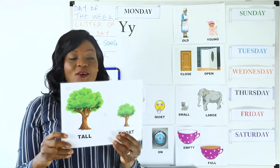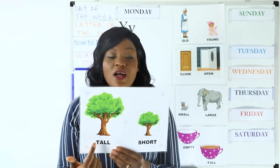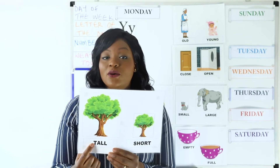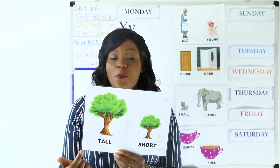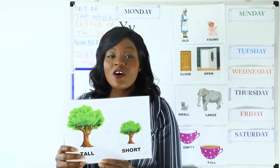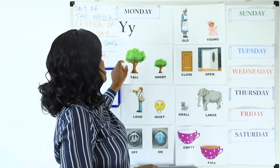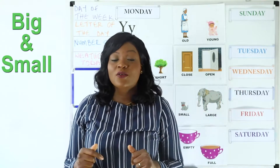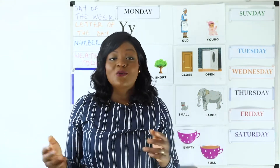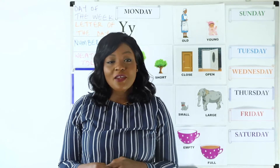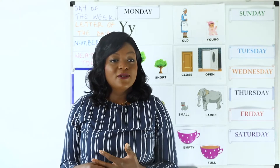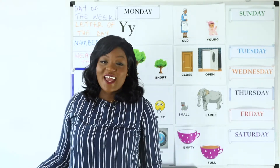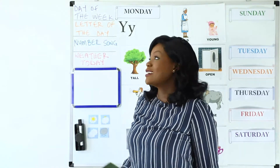And lastly we have tall and short. This is a tall tree and this is a short tree. The opposite of tall is short. We also have other opposites like day and night, big and small, little and big. Can you think of any other opposite words? Well done everyone and good job for doing the exercise.